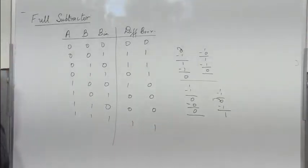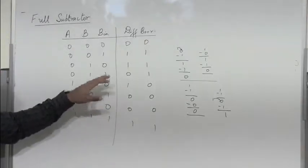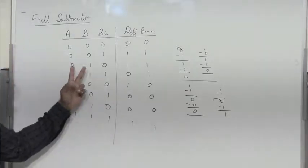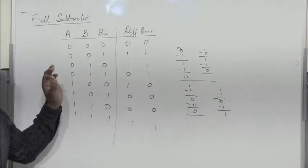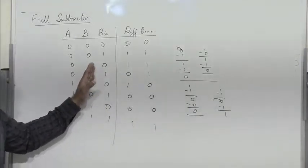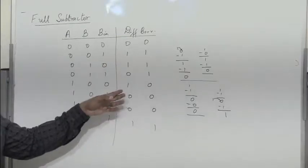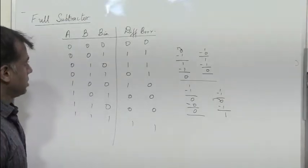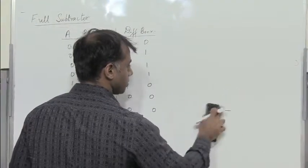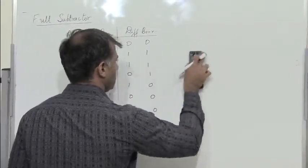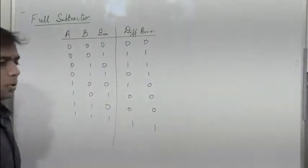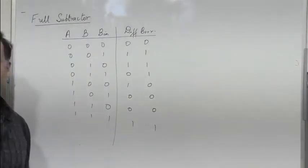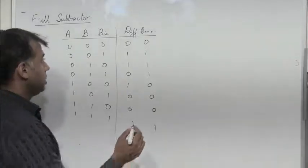So this is the truth table for a full subtractor. The easiest way to fill in the difference and borrow columns is to consider two bits at a time, identify the difference and borrow, and then subtract the third bit. Now we need to write the simplified expression for difference and borrow using a 3-variable KMAP.